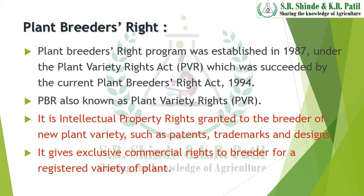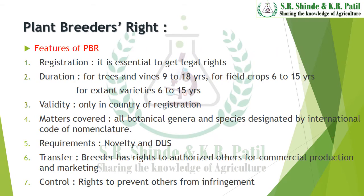The Plant Breeders Right gives exclusive commercial rights to a breeder for a registered variety of a plant. Now we will see some features of Plant Breeders Right. The first one is Registration — the breeder must be registered for Plant Breeders Right to obtain legal rights. Next is Duration — it is valid for 9 to 18 years for trees and vines, and 6 to 15 years for field crops and extent varieties.